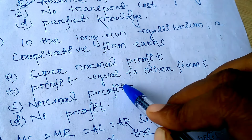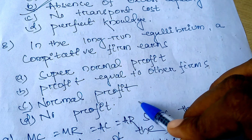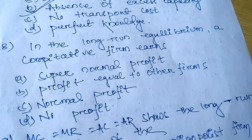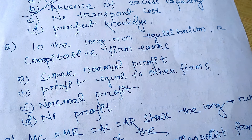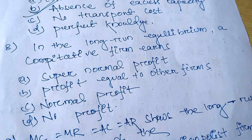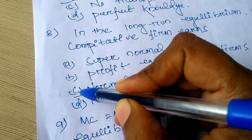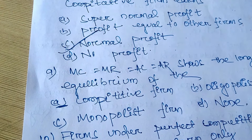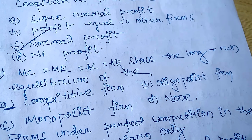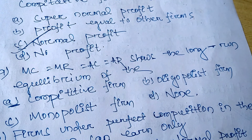In the long run equilibrium, a competitive firm earns: supernormal profit, profit equal to other firms, normal profit, or no profit. You have to know that in the long run, we find only normal profit in perfect competition. So normal profit is the correct option.